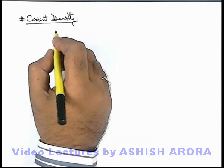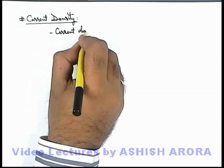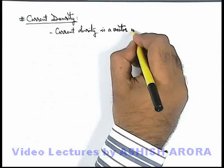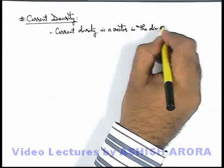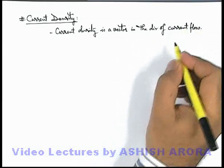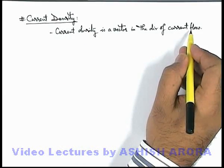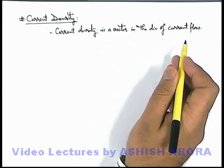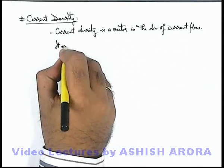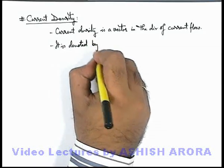This relationship is quite useful. The very first thing we must know is that current density is a vector in the direction of current flow. Always remember that current is a scalar quantity which only gives us the rate of flow of charge in magnitude, but current density is a vector in the direction of current flow which gives us the actual direction where the current is flowing. It is generally denoted by the letter J.